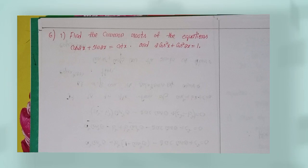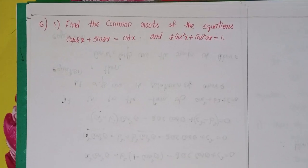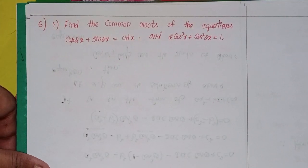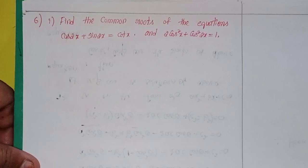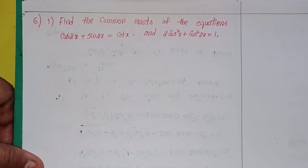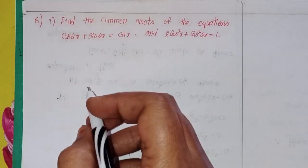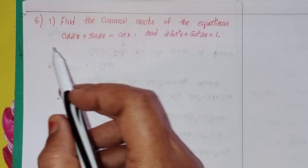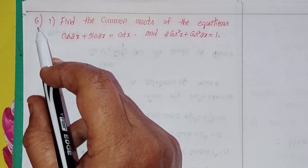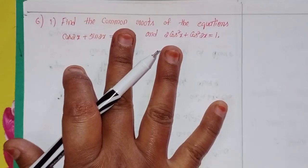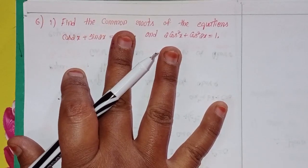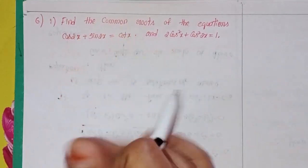Hi, my name is Shahin and welcome to my channel. Today we will discuss Intermediate First Year 1A, Chapter 7: Trigonometric Equations, Exercise 7A, third row in sixth. This is the last problem in this chapter.